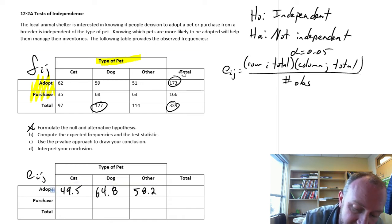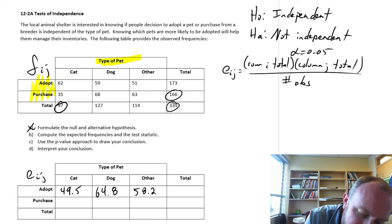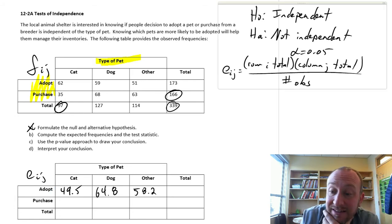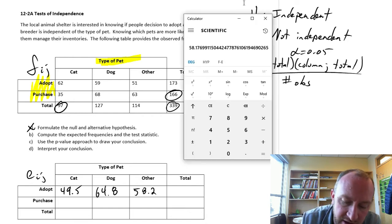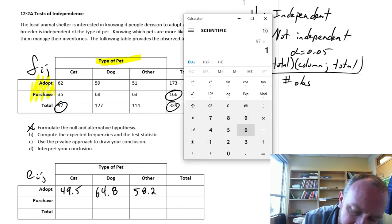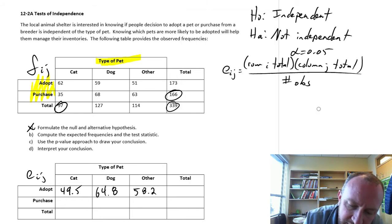Now when we go to purchase, it's the next line. So again, I go back to the cats. And now we're using this row total. So 166 becomes our relevant value there. So 97 times 166 divided by 339. So 47.5.